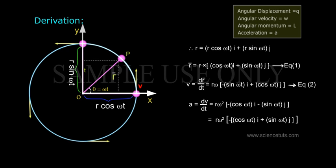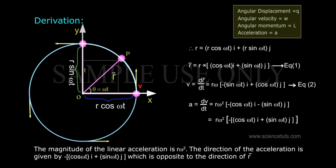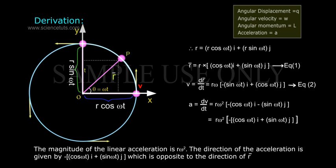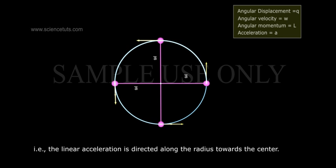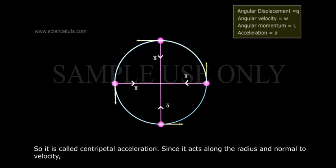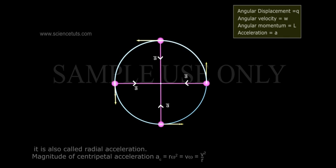The magnitude of the linear acceleration is r·omega². The direction of the acceleration is given by −cos(omega·t)·i − sin(omega·t)·j, which is opposite to the direction of r. That is, the linear acceleration is directed along the radius towards the centre, so it is called centripetal acceleration. Since it acts along the radius and normal to velocity, it is also called radial acceleration.